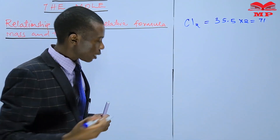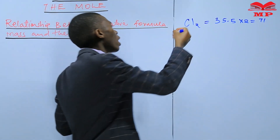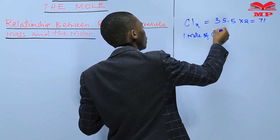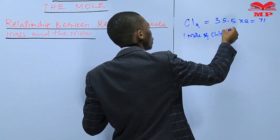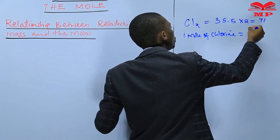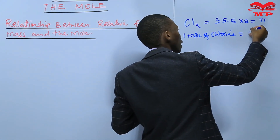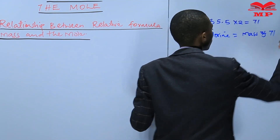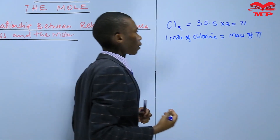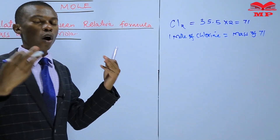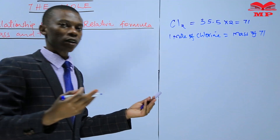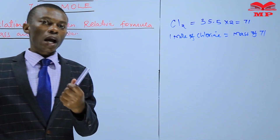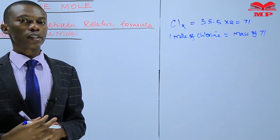We said that one mole of chlorine is equivalent to a mass of 71. That is the relationship — one mole of chlorine gas is equivalent to a mass of 71.